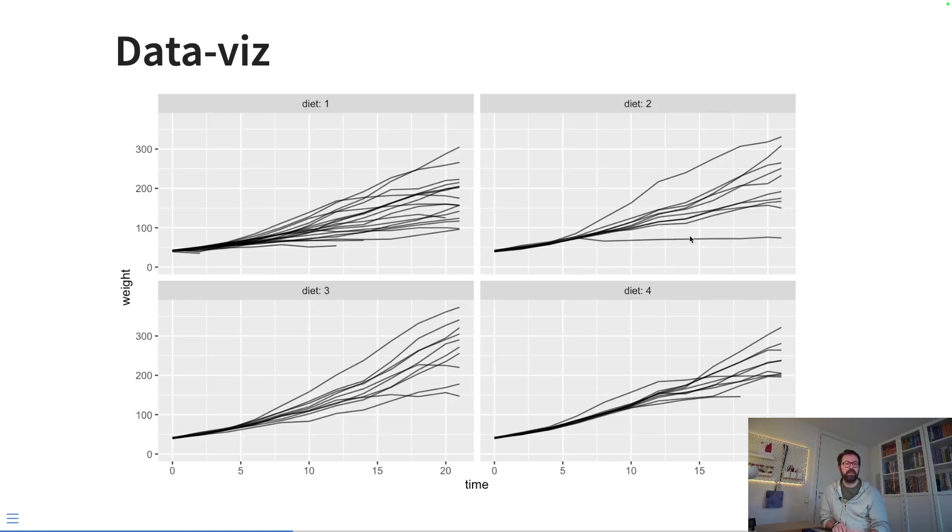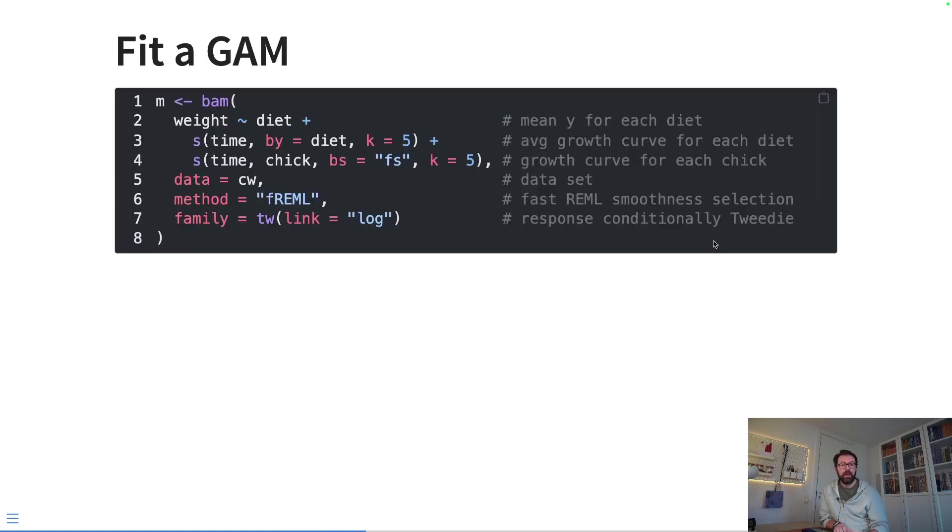This is what the data look like. As you can see, we might see some sort of nonlinear patterns. There's obviously variability among the diets and among the chicks, but most—a lot of the variability seems to be among the chicks. But we're going to see what are the effects of the different diets on the growth rate of these chicks.